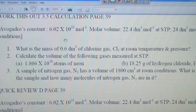You have Avogadro's constant 6.02 times 10 to the 23 per mole. Molar volume is 22.4 dm³ per mole at STP and 24 dm³ per mole at room condition.